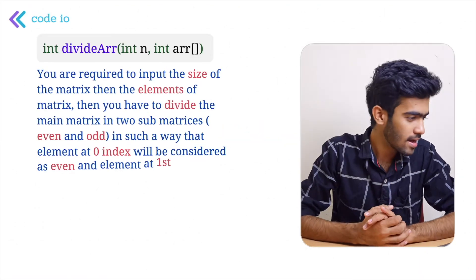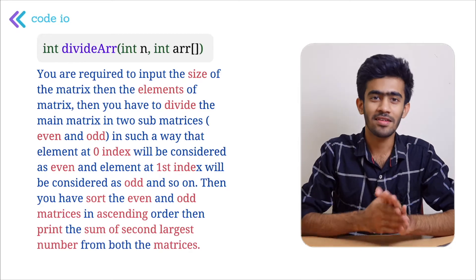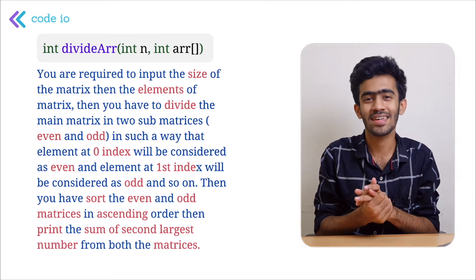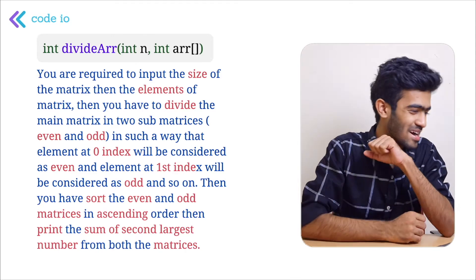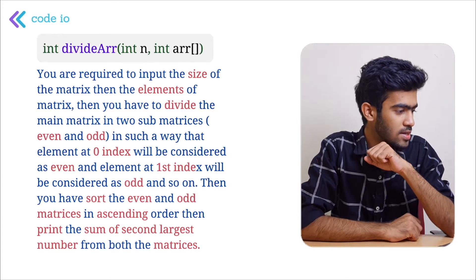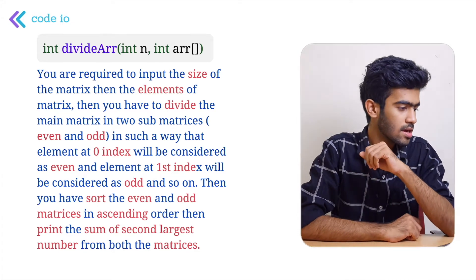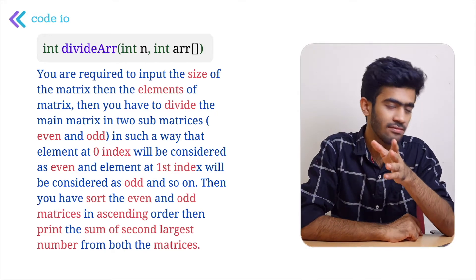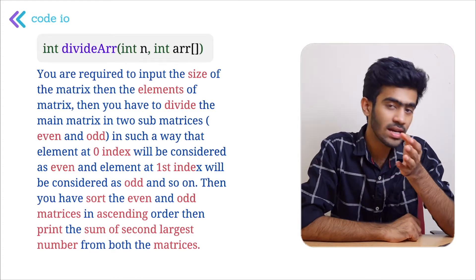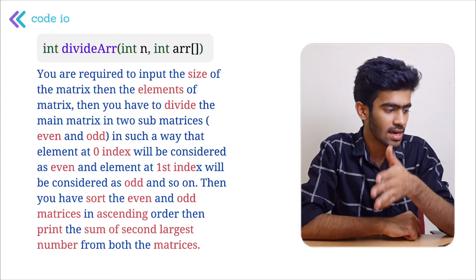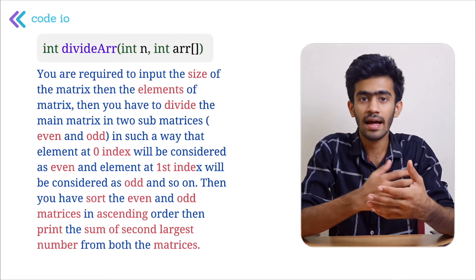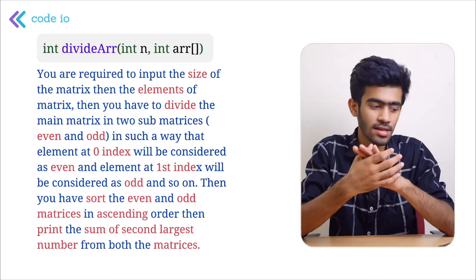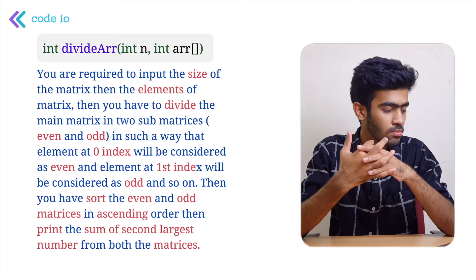Let's read the question. You are required to input the size of the matrix, then the elements of the matrix. Then you have to divide the main matrix into two sub-matrices: even and odd, such that the element at the zeroth index is considered even and the element at the first index is considered odd, and so on. Then you have to sort the even and odd matrices in ascending order, then print the second largest number from both the matrices.